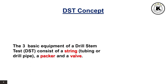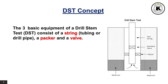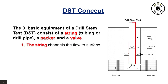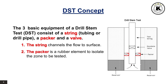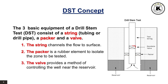The three basic equipment of a Drill Stem Test consist of a string — tubing or drill pipe — a packer, and a valve. The string channels the flow to surface. The packer is a rubber element to isolate the zone to be tested. The valve provides a method of controlling the well near the reservoir.